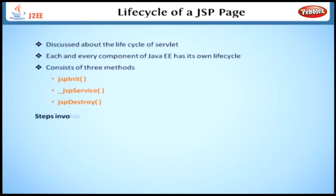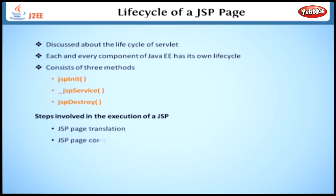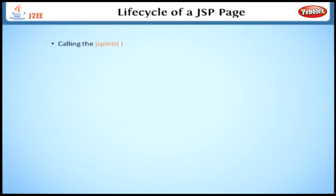Now we look at the steps involved in the execution of a JSP. The steps are: JSP page translation, JSP page compilation, loading the class, creating an instance of that class, calling the jspInit method, then calling the _jspService method, and finally the jspDestroy method.